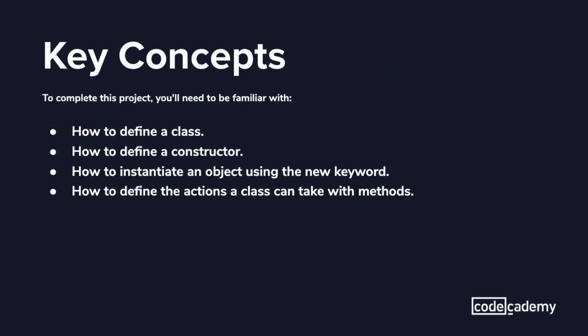So far, we've learned the basics of working with objects in C Sharp. To complete this project, you'll need to be familiar with how to define a class, how to define a constructor, how to instantiate an object using the new keyword, and how to define the actions a class can take with methods. Okay, let's get started.